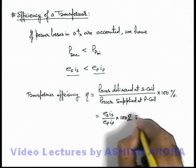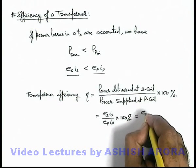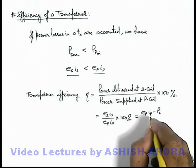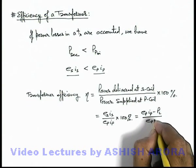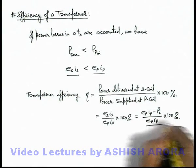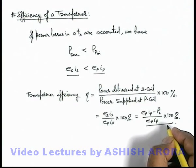And this power delivered to secondary coil can also be written as (Ep·Ip minus power losses) in the transformer divided by Ep·Ip, multiplied by 100 percent. This is how we define and calculate transformer efficiency.